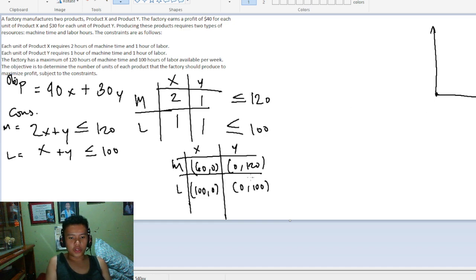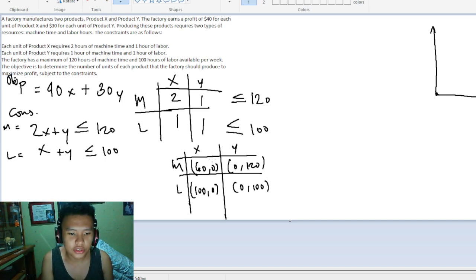We're going to plot the points. Let's say the maximum x value is 100. We have 60 comma 0 here, and its partner is 0 comma 120 at the top. Let's label x and y so we don't get confused.